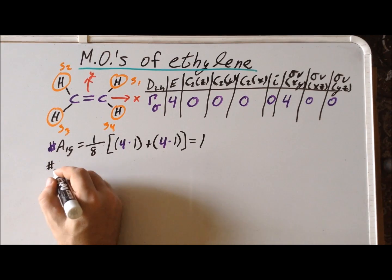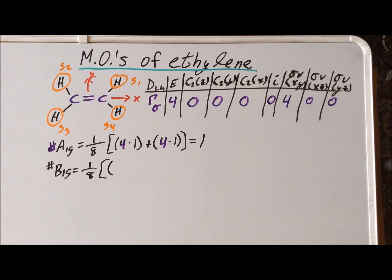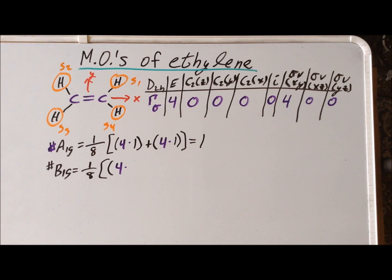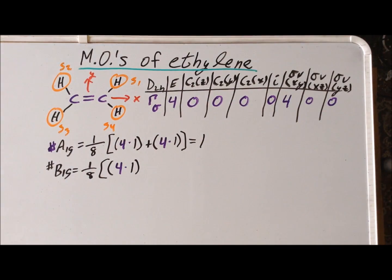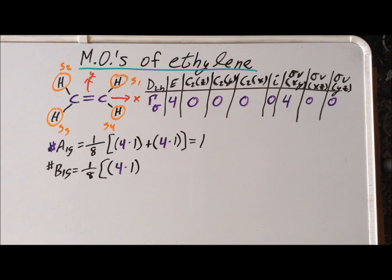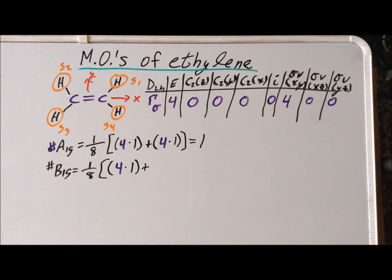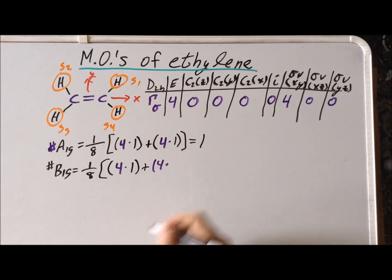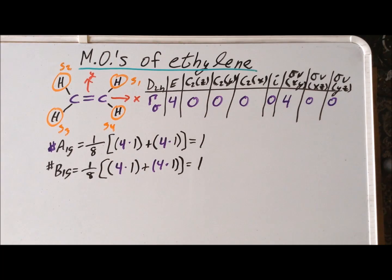So let's see how many B1g's we have. The four comes from the reducible representation, and the character for B1g for E is one. For sigma v xy, the character from the reducible representation is four and the character from B1g is a positive one. So again, we have one B1g in the reducible representation.